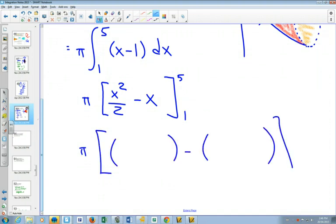1 minus the other one. Set up my brackets first. So if I plug in 5, I'm going to get 25 over 2 minus 5, minus 1 over 2 minus 1. Now, you could, inside those brackets, put things together.